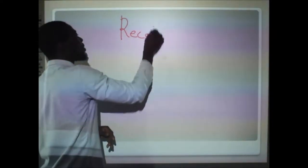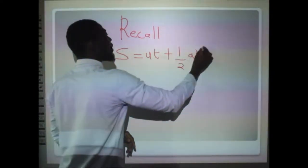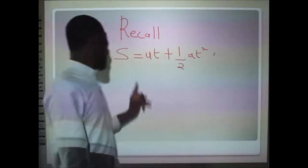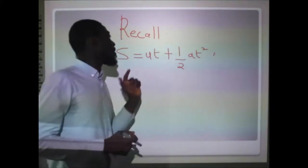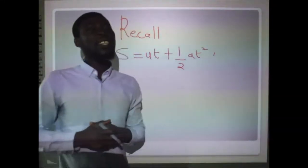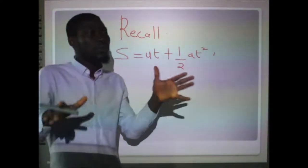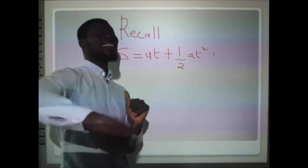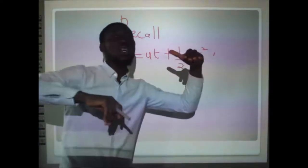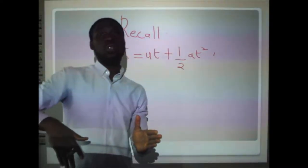Recall our third equation of motion: S = ut + ½at², with no v. S is the distance, u the initial velocity, t the time, and a the acceleration. The two independent motions — constant horizontal motion (x-axis) and vertical motion of free fall due to gravity (y-axis) — are what we will use fundamentally to derive the equation of trajectory.